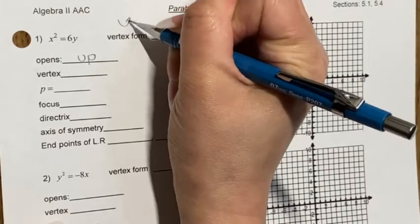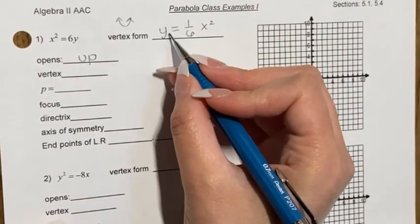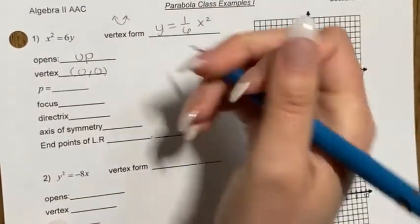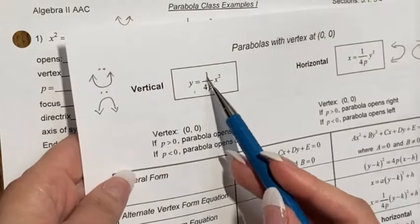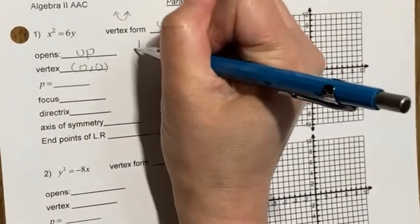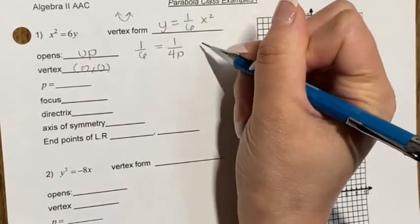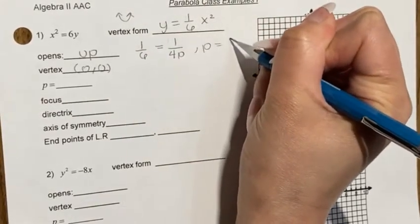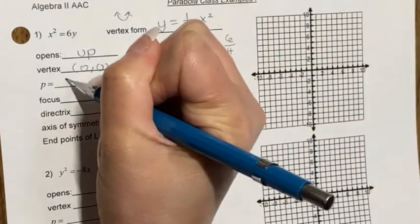The parabola opens up and since we're not adding or subtracting anything from x or y, the vertex is (0, 0). To find p: the constant 1/6 equals 1/(4p), so set 1/6 = 1/(4p) and solve — cross-multiplying gives 4p = 6, so p = 6/4 = 3/2.